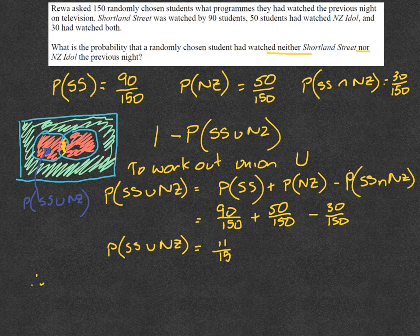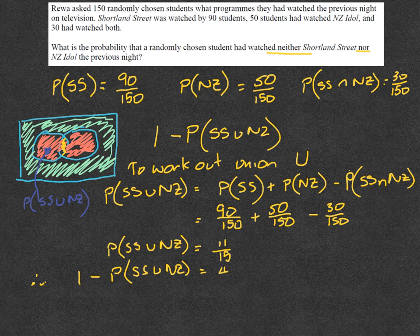But of course, we want to find out neither of those two. So 1 minus the probability of SS union NZ is equal to 4 fifteenths.